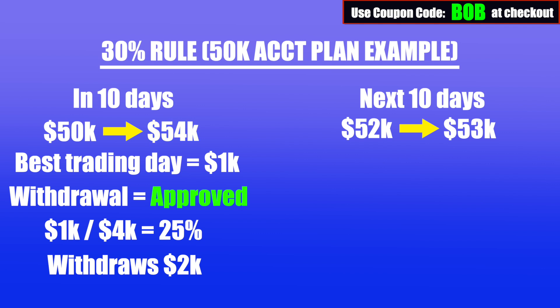Remember, your current P&L only accounts for whatever profits currently remain in your balance, not the profits you've already withdrawn. Another important detail: your highest profitable day is determined based on each payout cycle. Should you request a payout on trading day 15, your subsequent highest profitable day for the 30% rule will be considered from day 16 until the date of your next payout request. So it's basically from cycle to cycle.